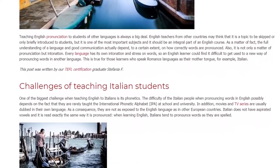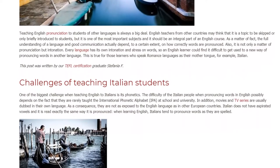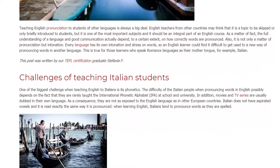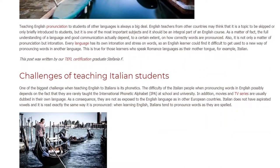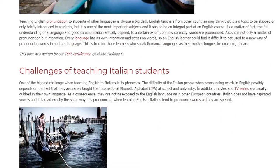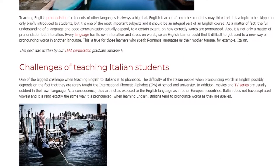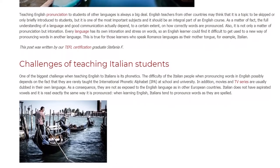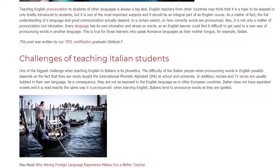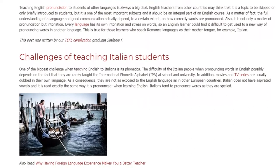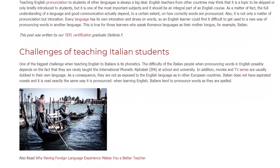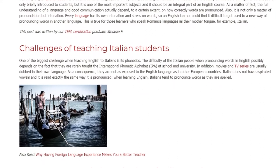In addition, movies and TV series are usually dubbed in their own language. As a consequence, they are not as exposed to the English language as in other European countries. Italian does not have aspirated vowels and it is read exactly the same way it is pronounced. When learning English, Italians tend to pronounce words as they are spelled.